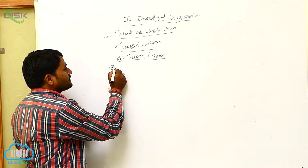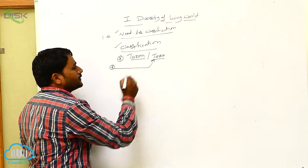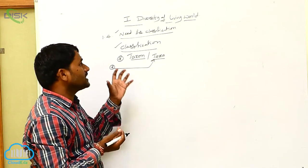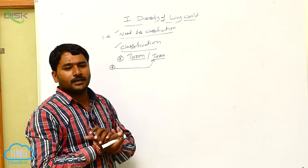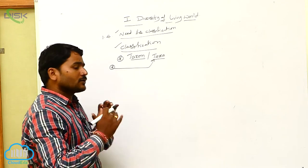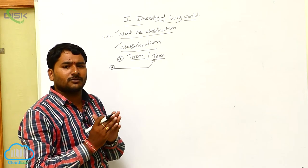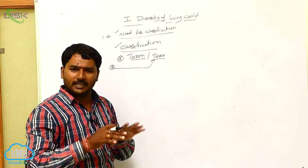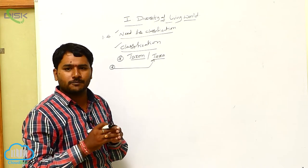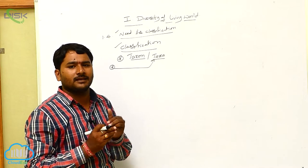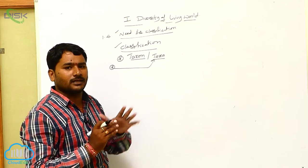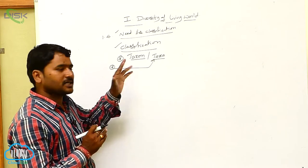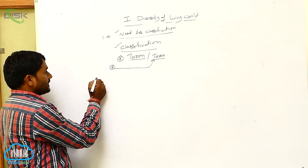All the living organisms are divided into different types of taxon. Whenever you want to understand about the living organisms, if they are separated into different types of categories or groups, then you can easily study about them. That is why classification is needed for better understanding.